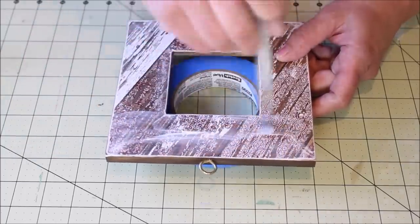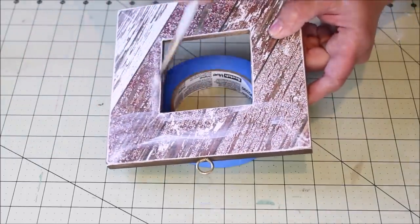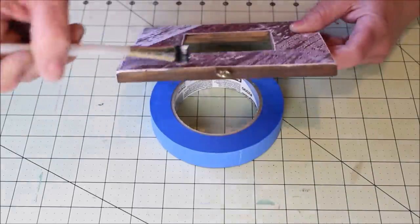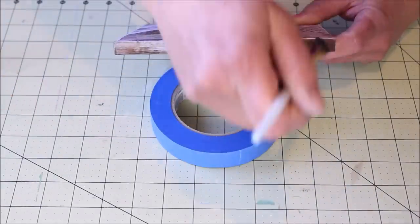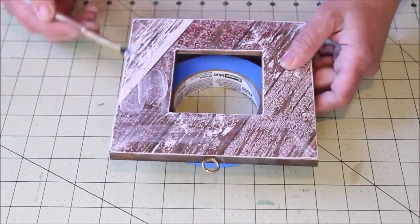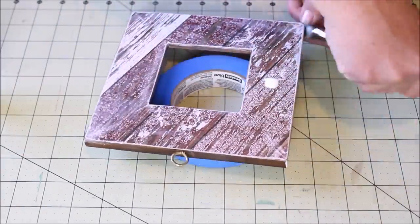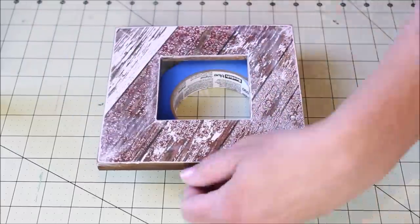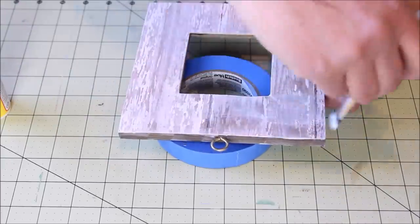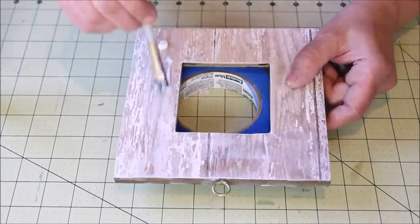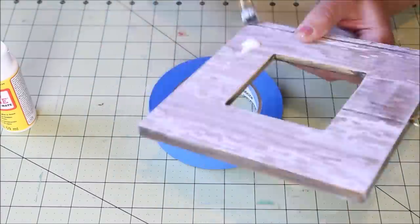Then to seal the paper, I topped it with a coat of Mod Podge, applying it in the same way that I did previously. I repeated the sanding and Mod Podging steps on the second frame as well and then set them aside to dry.